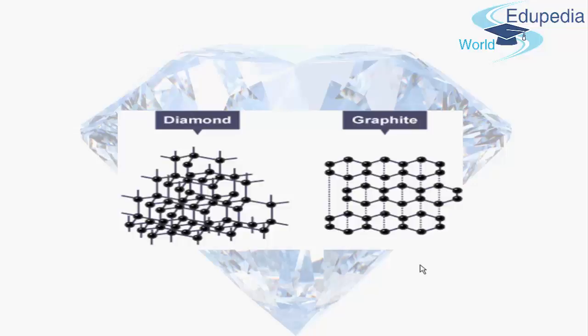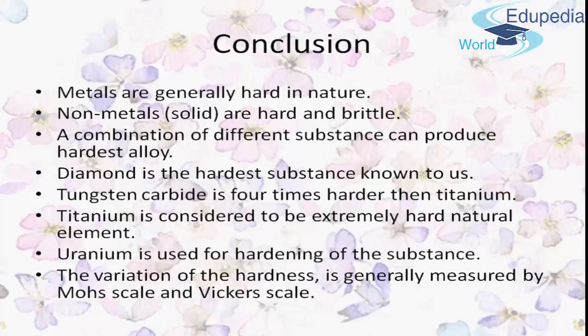Hardness is a relative term when applied to both metals and non-metals. In conclusion: metals are generally hard; non-metals when solid are hard and brittle. A combination of different substances can produce a harder alloy. Factors for assessing hardness include melting point (which usually correlates with higher hardness), scratch resistance, density, tensile strength, yield strength, and values on standard hardness scales.